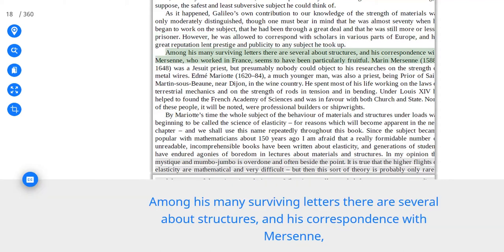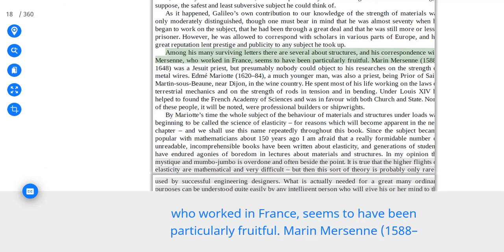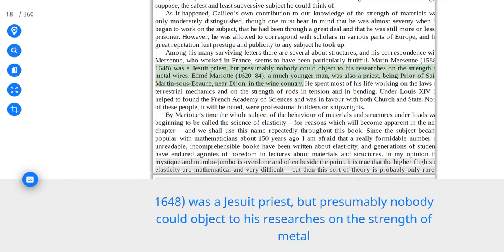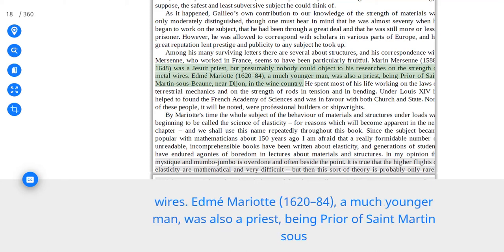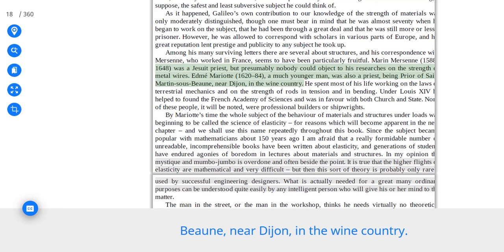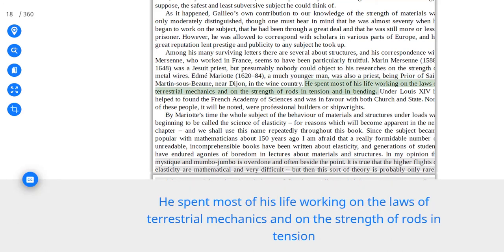However, he was allowed to correspond with scholars in various parts of Europe, and his great reputation lent prestige and publicity to any subject he took up. Among his many surviving letters there are several about structures, and his correspondence with Mersenne, who worked in France, seems to have been particularly fruitful. Marin Mersenne, 1588-1648, was a Jesuit priest, but presumably nobody could object to his researches on the strength of metal wires. Edme Mariotte, 1620-84, a much younger man, was also a priest, being prior of St. Martin's-sous-Beaune, near Dijon, in the wine country. He spent most of his life working on the laws of terrestrial mechanics and on the strength of rods in tension and in bending.